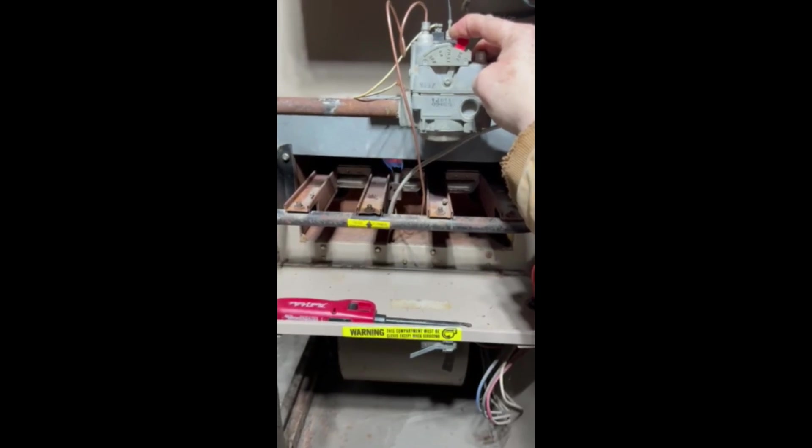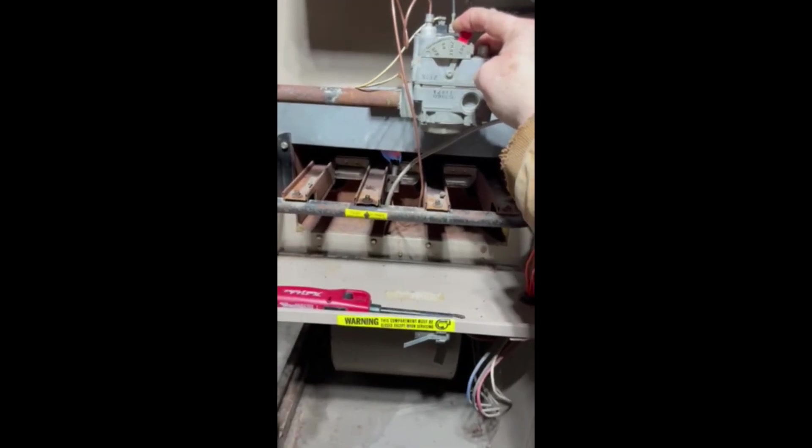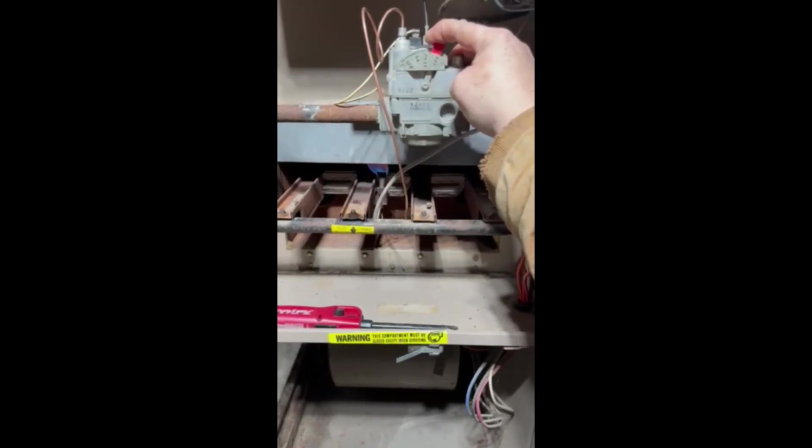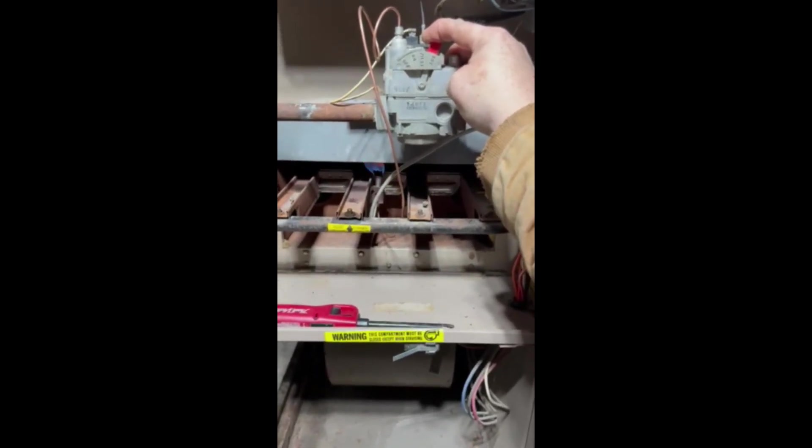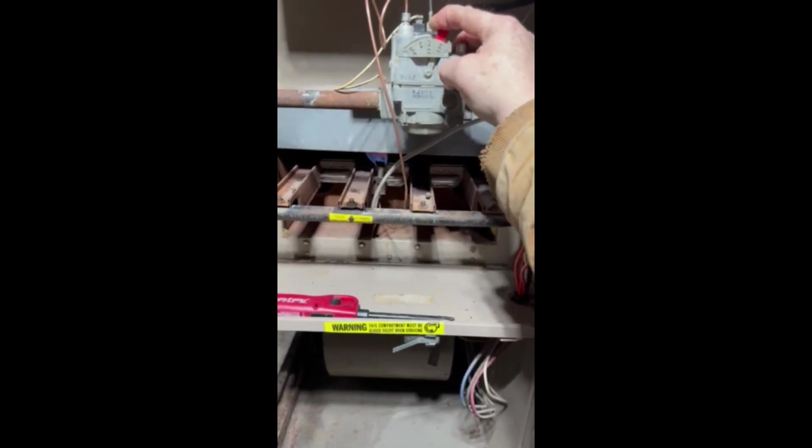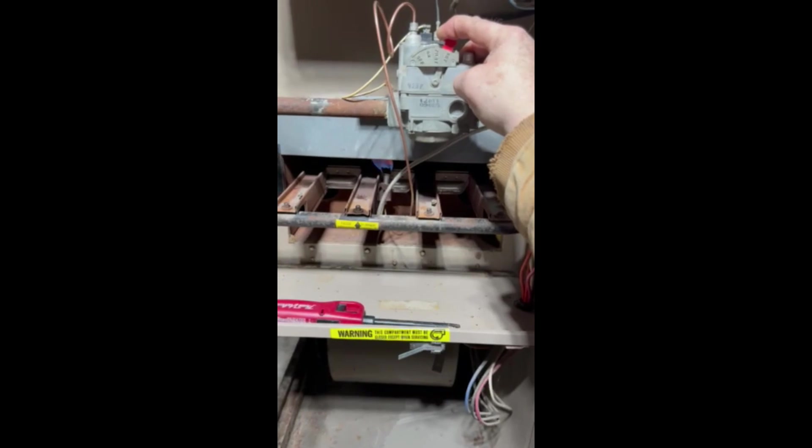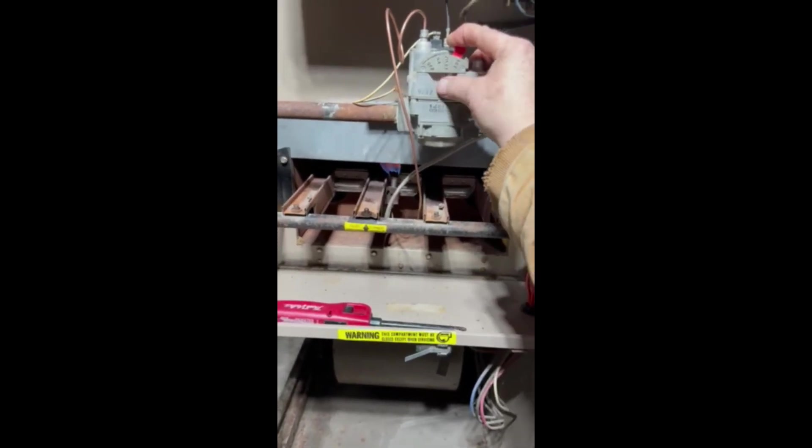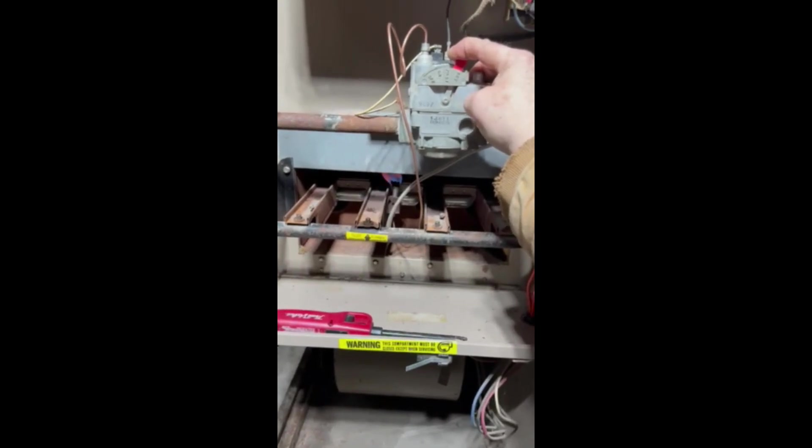So it takes a little while to heat up that tip and generate the 30 millivolts. It takes 1,000 millivolts to make one volt, so 30 millivolts is very small. And it takes about a minute to generate enough electricity to activate the electromagnet inside the gas valve.